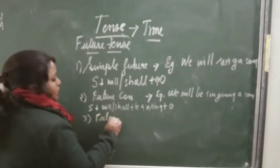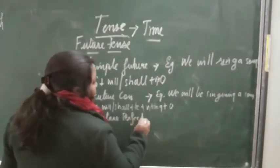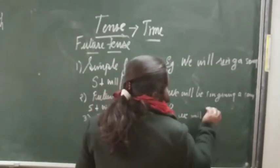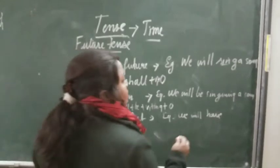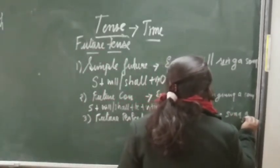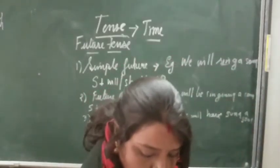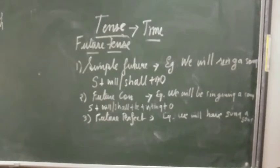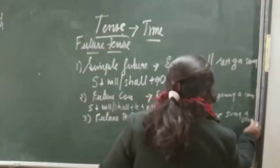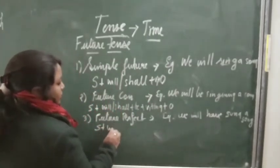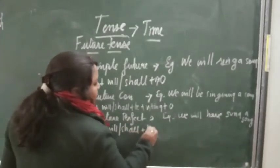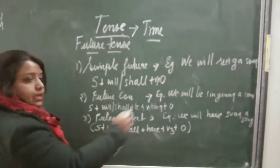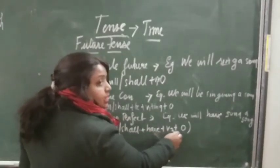Third is future perfect. In future perfect, you write: we will have sung a song. The structure is: subject plus will or shall plus have plus verb third form plus object.